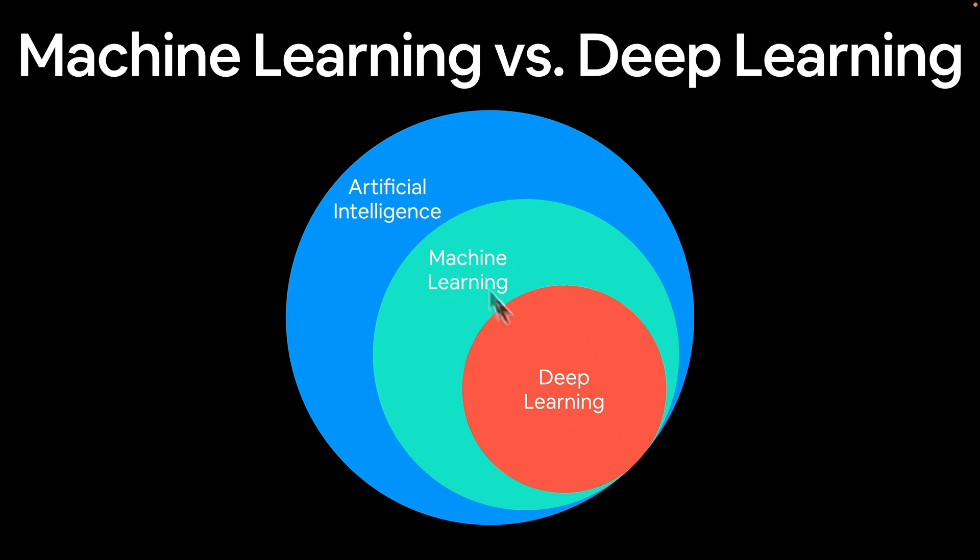Truth be told, I kind of use these two terms interchangeably. Yes, ML is the broader topic and deep learning is a bit more nuanced. But again, if you want to form your own definitions of these, I'd highly encourage you to do so.